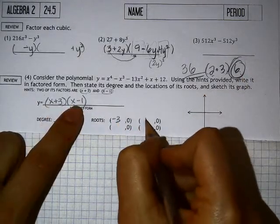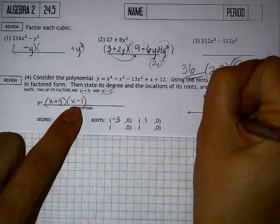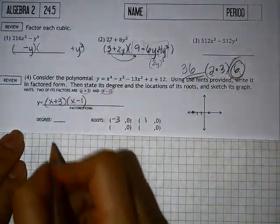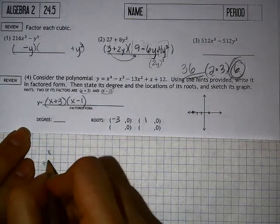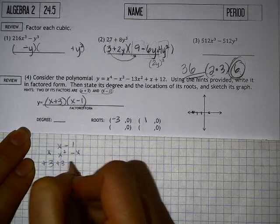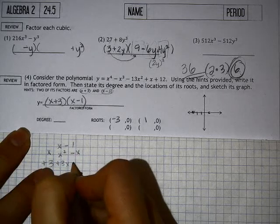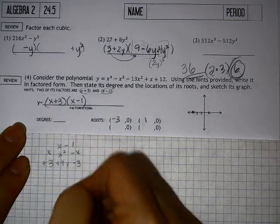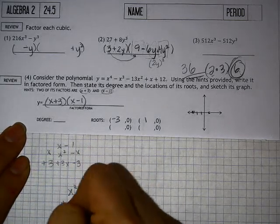First of all, I'm just going to put in these roots that I have so far. We have a 1 and we have a negative 3. So I'm going to multiply these two guys together. x plus 3 and x minus 1 gives me x squared minus x plus 3x and minus 3. So we get x squared plus 2x minus 3.